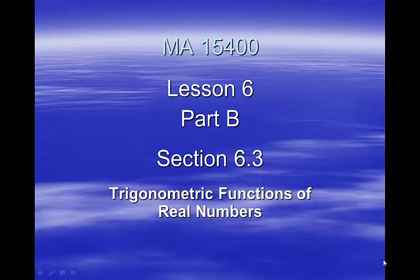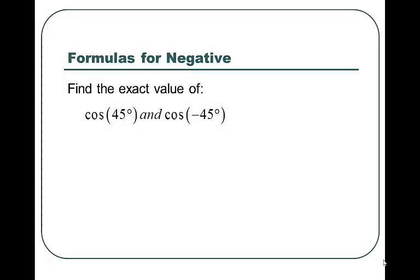Here's Lesson 6, Part B, Section 6.3, Trigonometric Functions of Real Numbers. So the formula for negatives — and there's a little bit of magic going on here. Find the exact value of cosine of 45 degrees and cosine of negative 45 degrees.